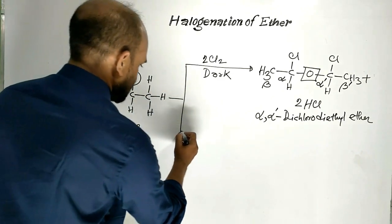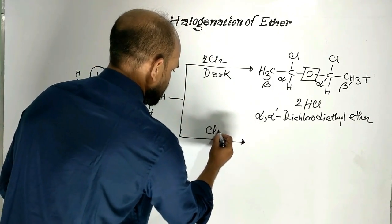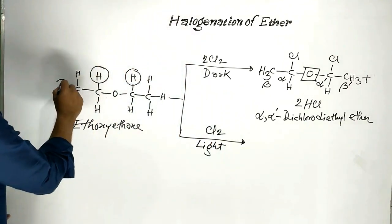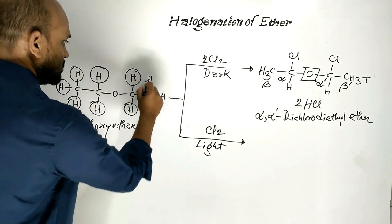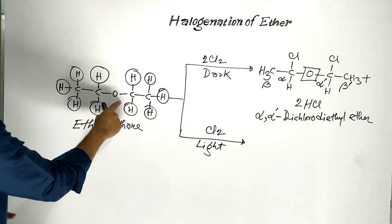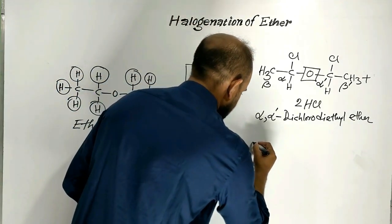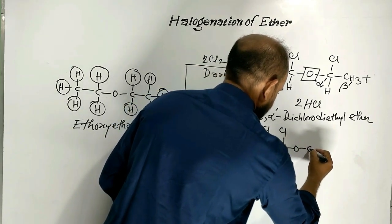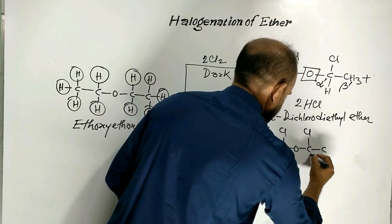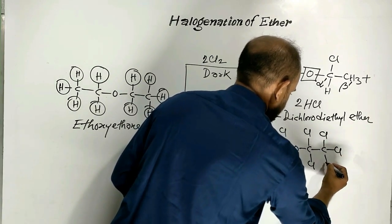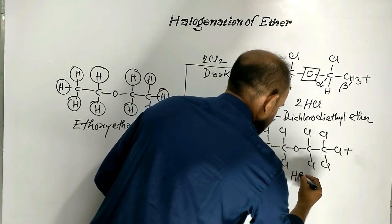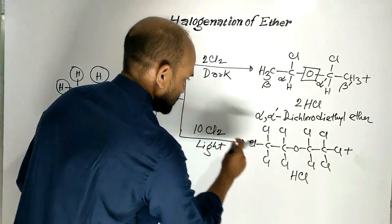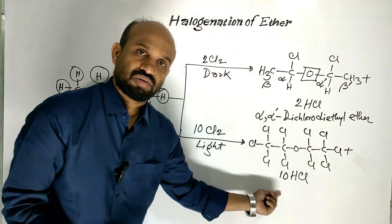Again, when ethoxy ethane is treated with chlorine in presence of light, then all the hydrogen atoms of diethyl ether are replaced by chlorine atoms. Then this is obtained. And HCl is formed as byproduct. When the reaction is balanced, then we will get here 10. And here, 10 molecules of hydrogen chloride will be formed.